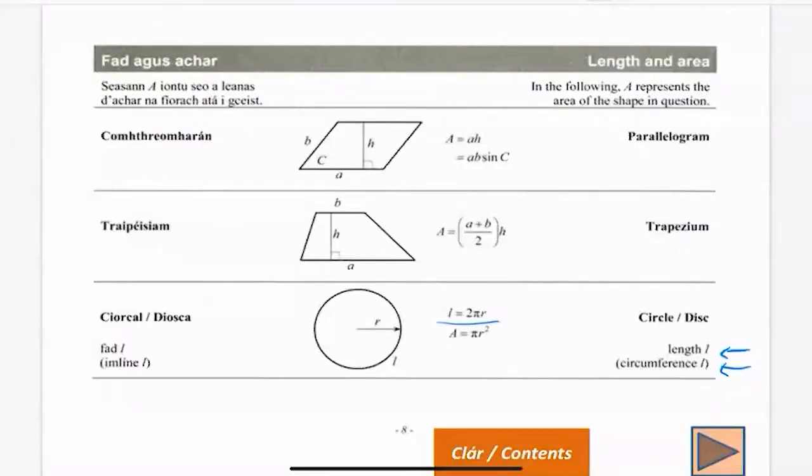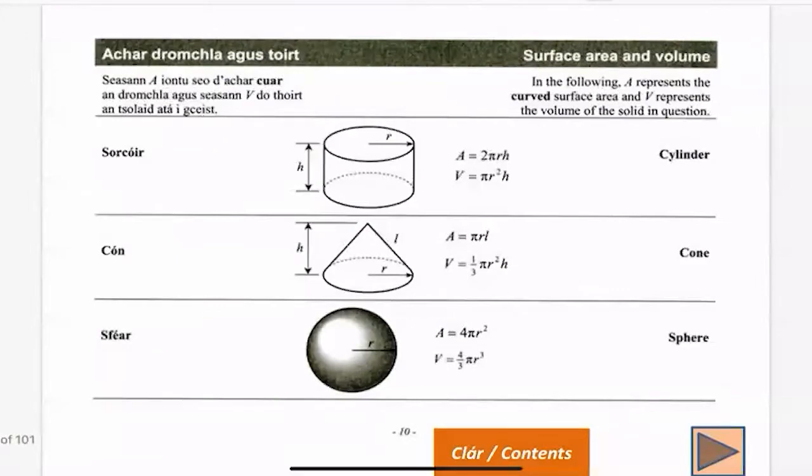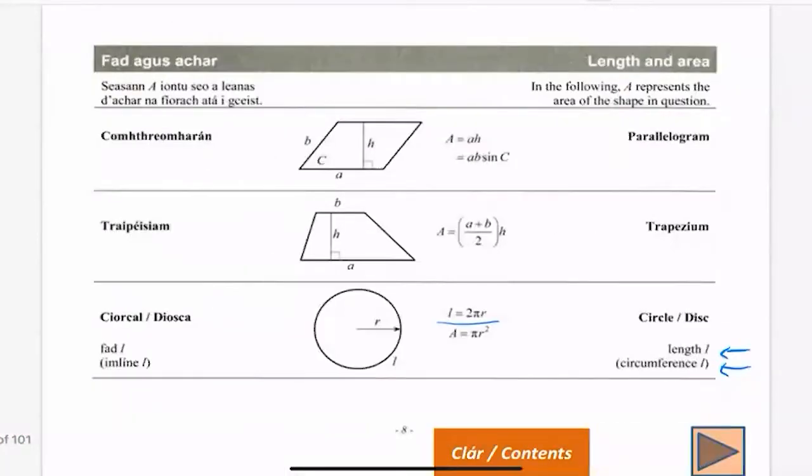The first part, Part A, says work out the circumference of a circle with the diameter of eight centimeters. Thankfully, your log tables is very kind to us. It also has area and volume in it. So on one of the very first pages is your area, and then if you scroll on two pages, there's your volume. So make sure you know what formulas are in here. The square and the rectangle aren't because they expect you to know them, but the circle is.